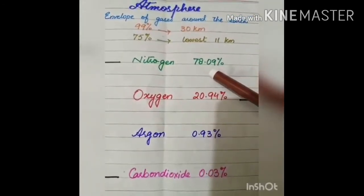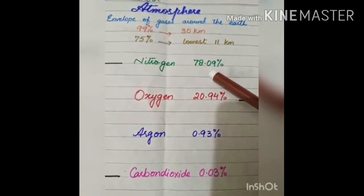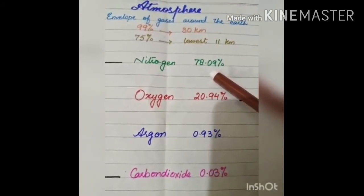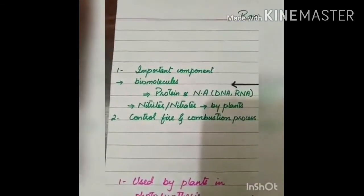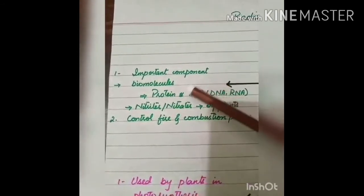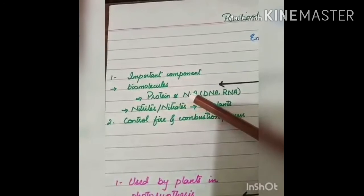Nitrogen is a gas which occupies the maximum composition of atmosphere by volume which is 78.09%. This gas is important because it is the important component of biomolecules like proteins and nucleic acids.